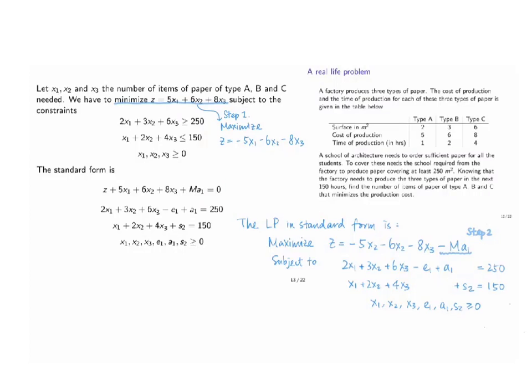Let x1, x2 and x3 be the number of items of paper of type A, type B and type C respectively. We wish to minimize the production cost which has the function z equals 5x1 plus 6x2 plus 8x3.